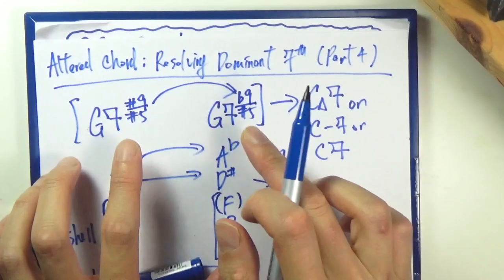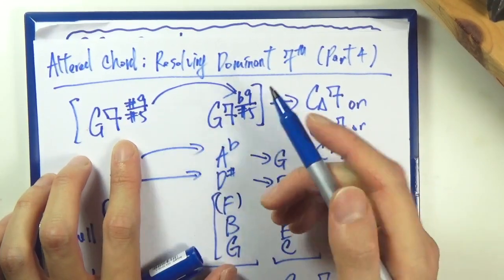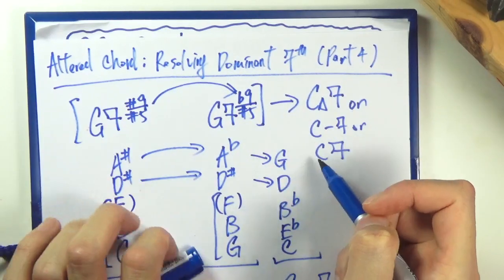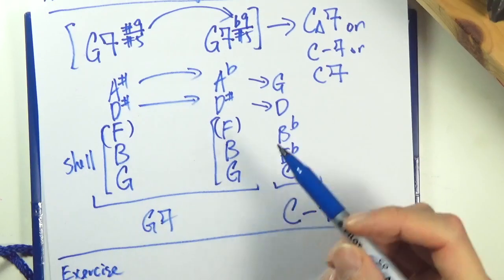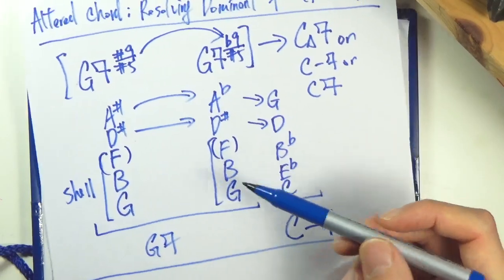After that you can go to C major 7, C minor 7, or C dominant 7, it doesn't matter. For this example we'll focus on the C minor 7.